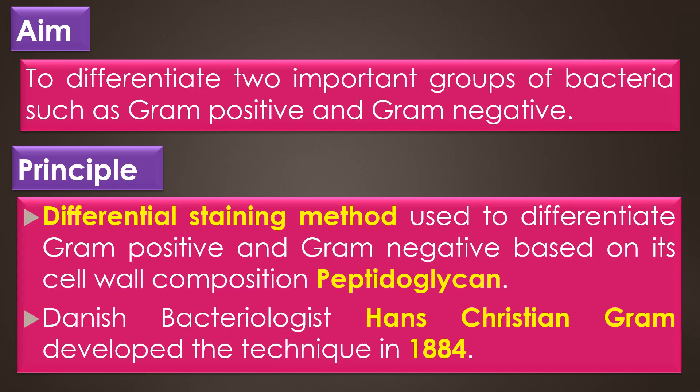The aim of the gram staining technique is to differentiate two important groups of bacteria such as gram positive bacteria and gram negative bacteria. Regarding the principle, the gram staining technique is a differential staining method used to differentiate different species into two large groups like gram positive and gram negative based on its cell wall composition, peptidoglycan.